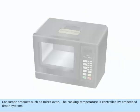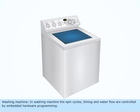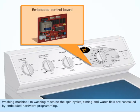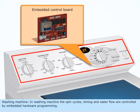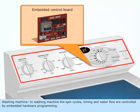Consumer products such as microwave oven: the cooking temperature is controlled by embedded timer systems. Washing machine: the spin cycles, timing, and water flow are controlled by embedded hardware programming.